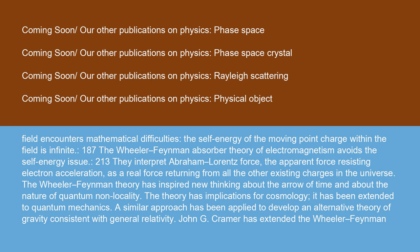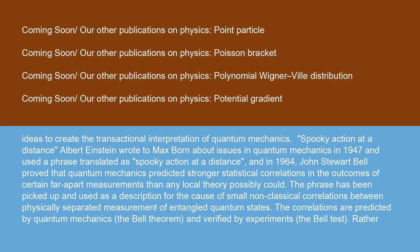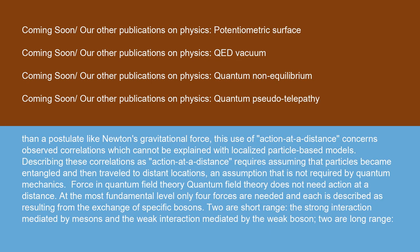John G. Cramer has extended the Wheeler-Feynman ideas to create the transactional interpretation of quantum mechanics. Spooky action at a distance: Albert Einstein wrote to Max Born about issues in quantum mechanics in 1947 and used a phrase translated as spooky action at a distance. And in 1964, John Stewart Bell proved that quantum mechanics predicted stronger statistical correlations in the outcomes of certain far-apart measurements than any local theory possibly could. The phrase has been picked up and used as a description for the cause of small non-classical correlations between physically separated measurement of entangled quantum states. The correlations are predicted by quantum mechanics, the Bell theorem, and verified by experiments, the Bell test. Rather than a postulate like Newton's gravitational force, this use of action at a distance concerns observed correlations which cannot be explained with localized particle-based models. Describing these correlations as action at a distance requires assuming that particles became entangled and then traveled to distant locations, an assumption that is not required by quantum mechanics.